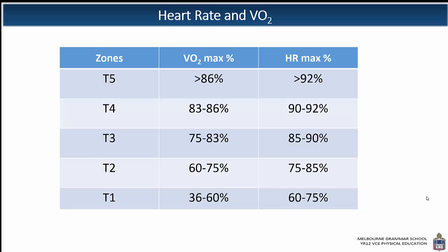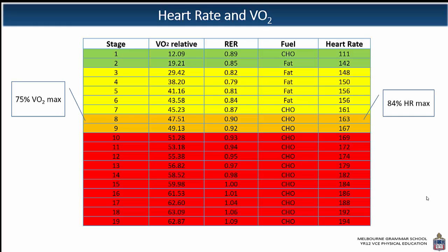Go back through each of these slides and do a thorough analysis of the zones and the difference between VO2 max percentage versus heart rate max percentage. Essentially, the percentage of VO2 max is always going to be below heart rate max — around 5%, 8%, maybe even 10% difference. Looking back at stage 8 in the table: 84% of heart rate max versus 75% of VO2 max — that difference illustrates the key concept. Hope that helped.